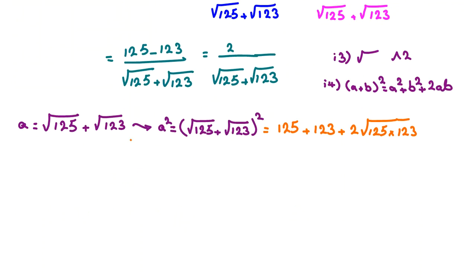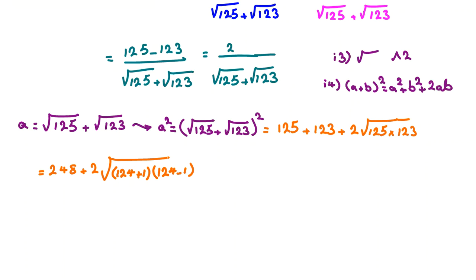We can say 1/5 plus 1/3 equals 8/15, plus 2 times √(1/5 · 1/3). Writing 1/5 as (1/4 + 1/20) and 1/3 as (1/4 − something), we get A² = 8/15 plus 2 times √[(1/4)² minus a small correction].